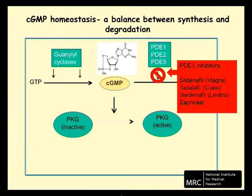We reasoned that if inhibitors of PKG block egress, then inhibitors of phosphodiesterases would result in an increase in steady-state cyclic GMP levels, which would activate PKG and might thereby induce egress. We found this to be the case.